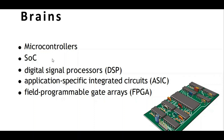Key processor types used in embedded systems include the Digital Signal Processor (DSP), used for analog-to-digital conversion; the Application-Specific Integrated Circuit (ASIC); and the Field-Programmable Gate Array (FPGA).